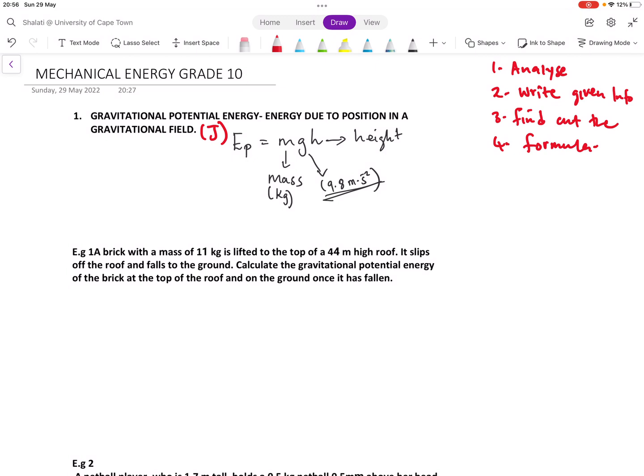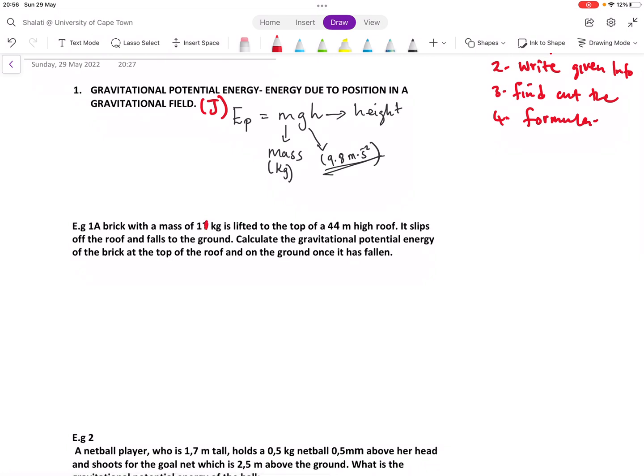Let's look at the first example. They say a brick with a mass of one kilogram is lifted to the top of a four meter high roof. It slips off the roof and falls to the ground. Calculate the gravitational potential energy of the brick at the top of the roof and on the ground once it has fallen. This question is in two parts. Firstly, we have to calculate at the top of the roof and also on the ground. Let's start at the top.